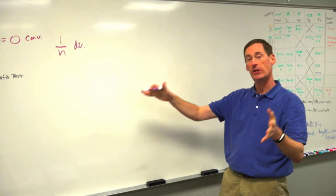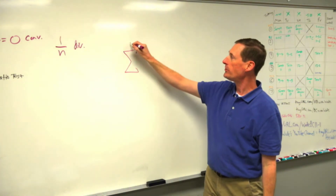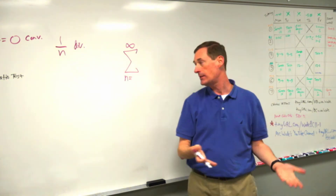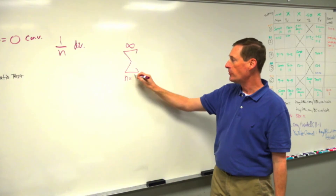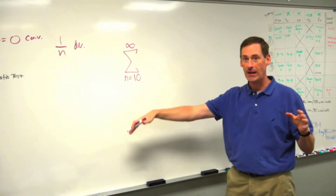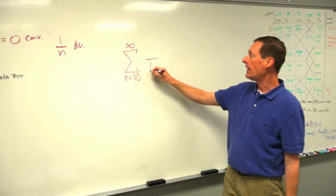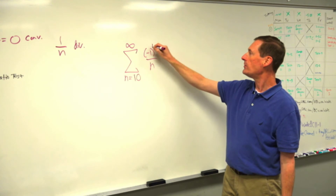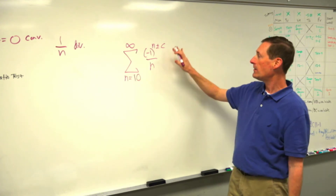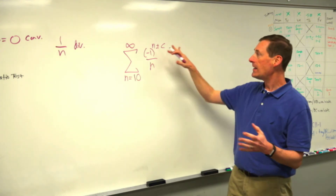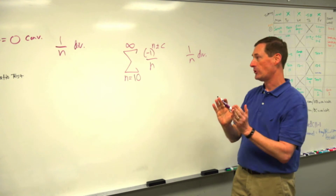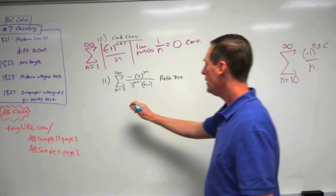Let's write down how to make your own conditionally convergent series for the test. You need a sigma running to infinity, starting at a place where the function exists — probably n equals one, not zero. Put n on the bottom and an oscillator on the top, like negative one to the n plus or minus any constant. The alternating series will converge, but put the bars on it and it turns into one over n, which diverges — so it's only conditionally convergent.